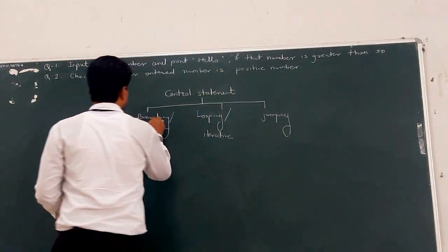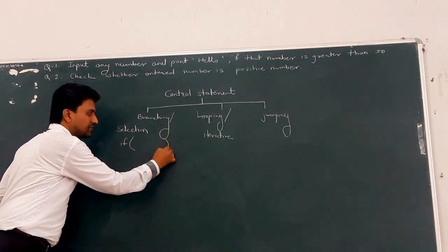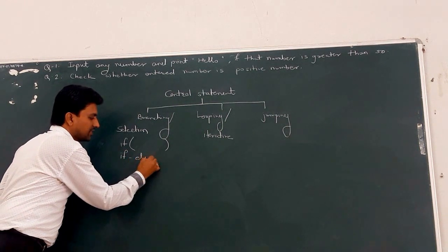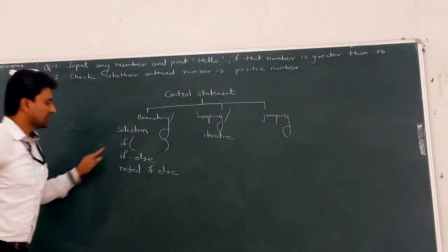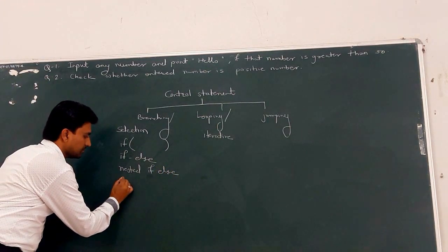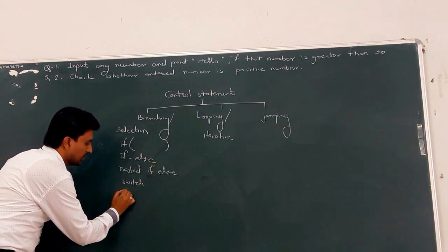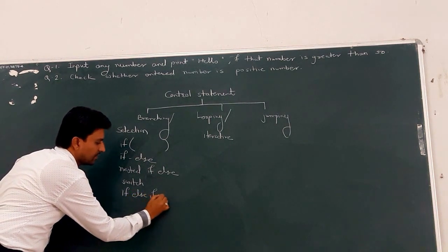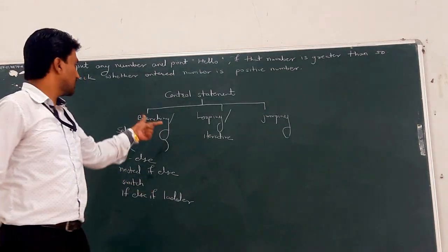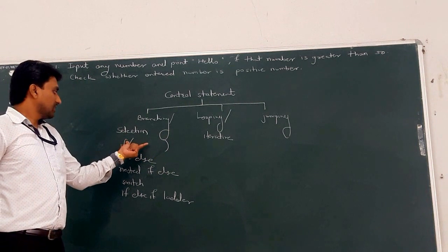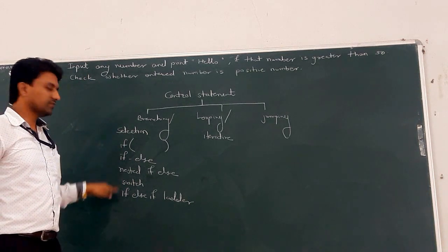The first type is branching or selection statements. In that, there are again a number of statements. First is the if statement, then if-else statement, next is nested if-else statement, then fourth type is switch-case, and ladder if-else. There are a total of five types of selection statements or branching statements. We will see what is the syntax and exact meaning of each, and problem statements based on each type.